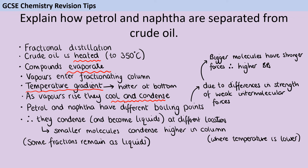The next thing to think about is the temperature gradient — it's OK if you haven't used that term; saying it's much hotter at the bottom and cooler at the top covers the same idea. Those are the points needed to reach level two and get three or four marks. To get five or six marks, you need to discuss these specific fractions — petrol and naphtha — and how they are separated: that they have different boiling points and therefore condense in different places. Mentioning the different locations or the smaller molecules being higher in the column would both work.